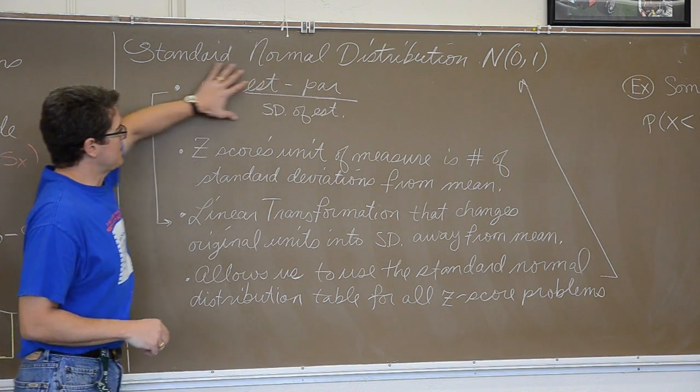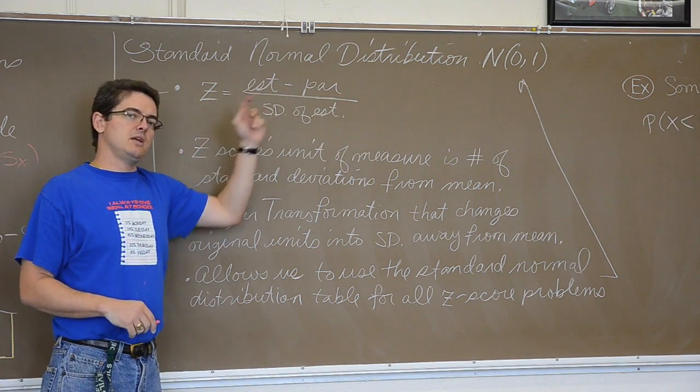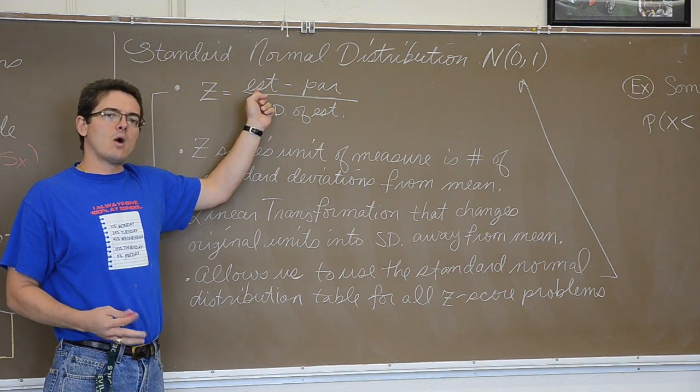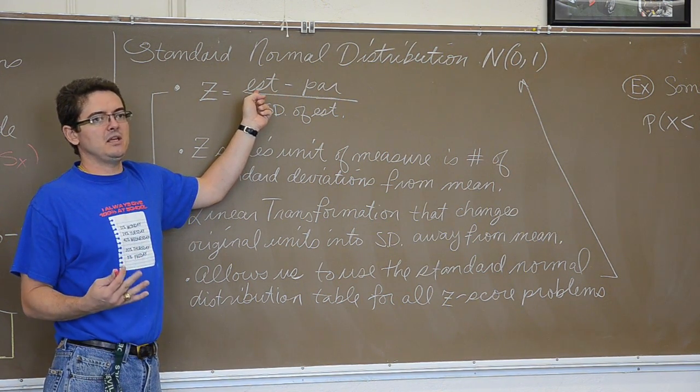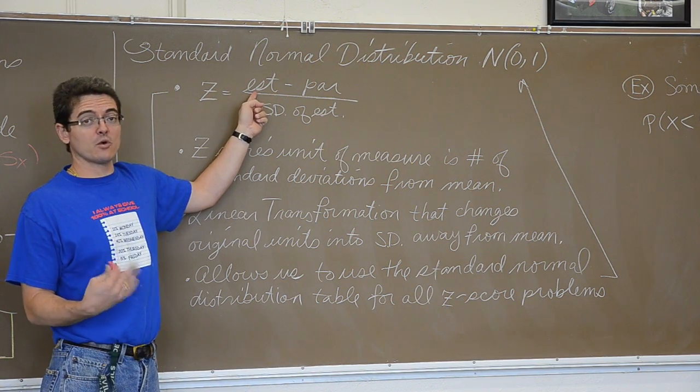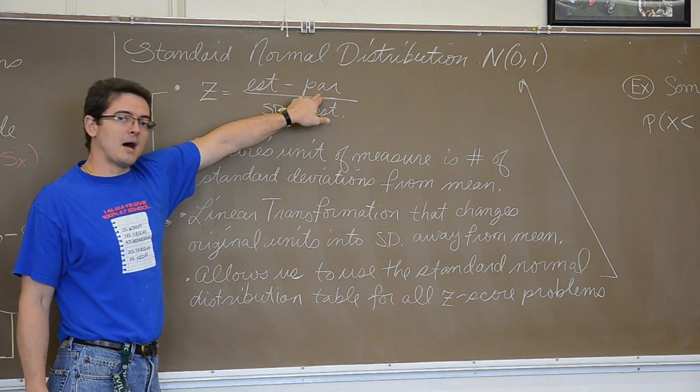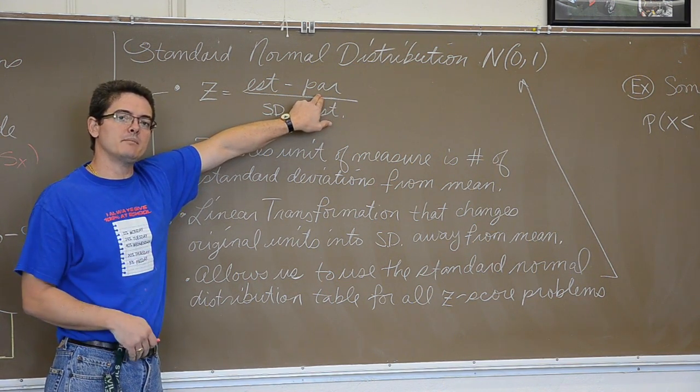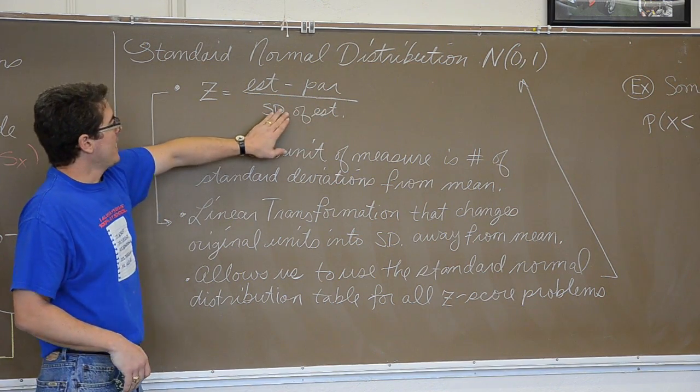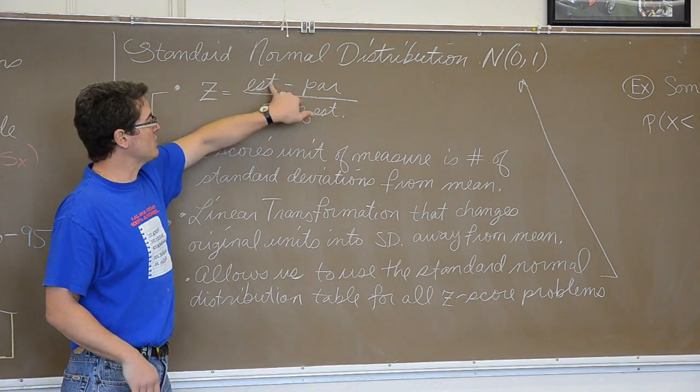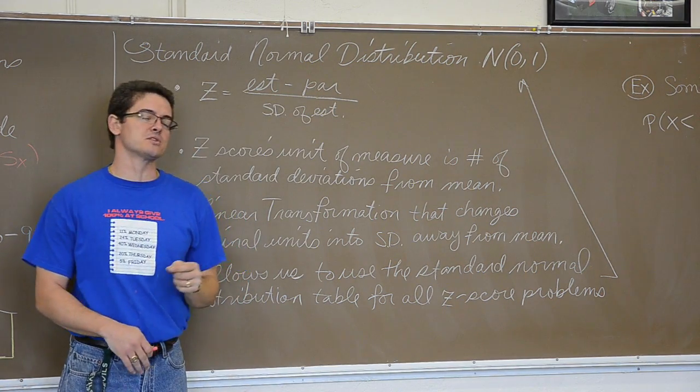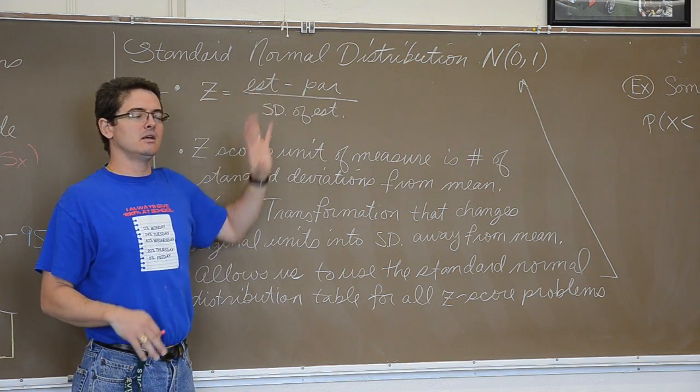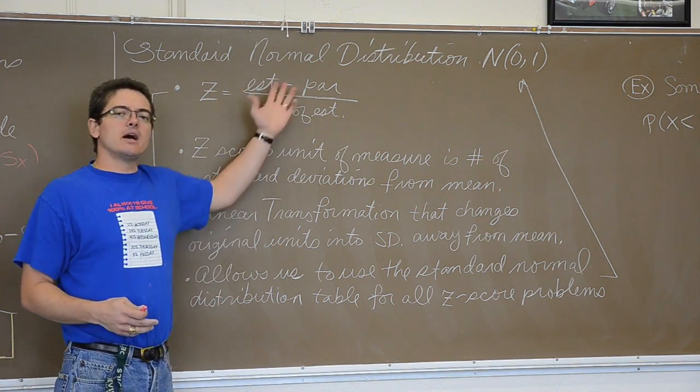We are going to run through this thing called a z-score. I have written it the way it will look like on your formula sheet. A z-score is found by taking the estimate - that is going to be the numerical value that you are given in the question - minus the parameter, the population parameter, something we know about the entire population. And the standard deviation of the estimate. These are in vague terms because we are going to work with all kinds of different variables this year: proportions, and means, and counts.